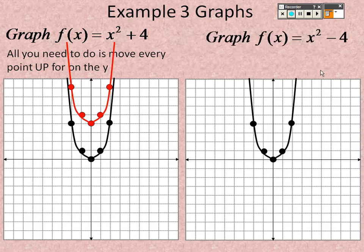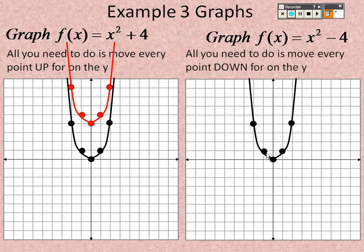For x² − 4, you move every single point down 4. So 1 down 4, 2 down 4, and so on — connect them and there is the new graph shifted down 4 units.